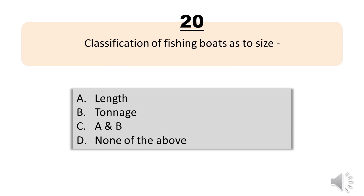Number 20. Classification of fishing boats as to size. A. Length. B. Tonnage. C. A and B. D. None of the above. The correct answer is Letter C. A and B.